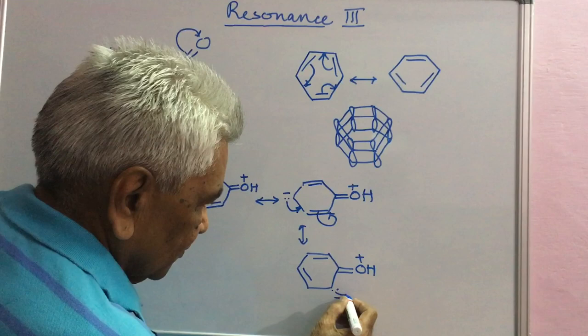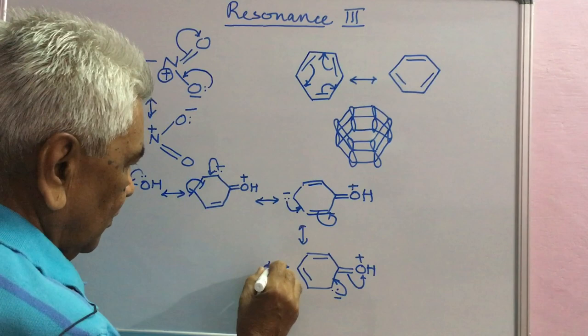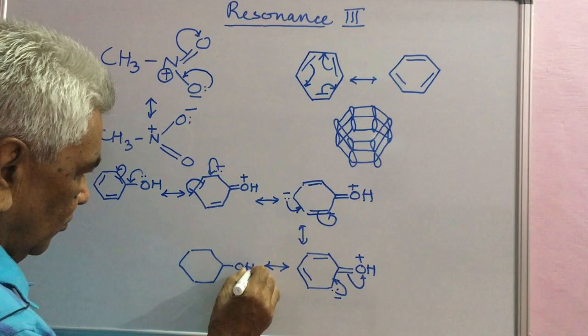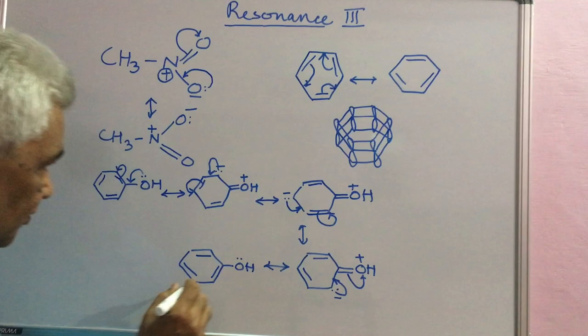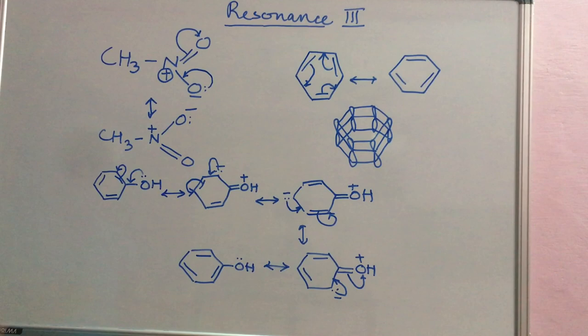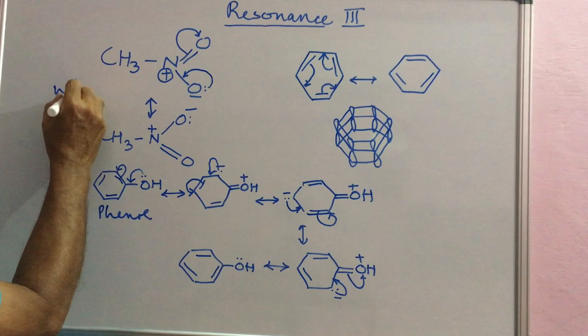And the last, again. You have this structure. Can you get all bonds? Have exchanged the position. This evolved. This is phenol. This is nitromethane.